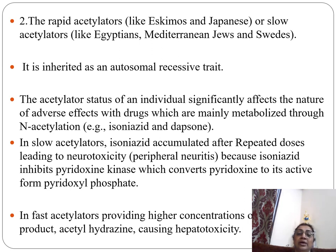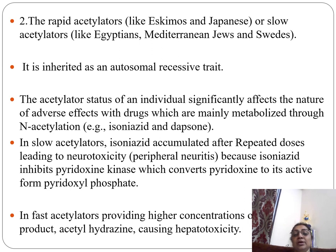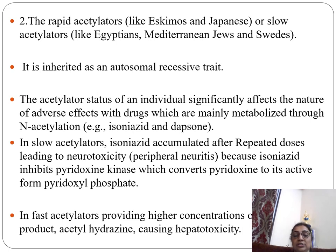The difference between rapid and slow acetylators is inherited as an autosomal recessive trait. Acetylator status significantly affects the nature of adverse effects for drugs mainly metabolized through acetylation, such as isoniazid and dapsone. In slow acetylators, isoniazid accumulates after repeated doses, leading to neurotoxicity because isoniazid inhibits pyridoxine kinase, which converts pyridoxine to its active form pyridoxal phosphate — causing peripheral neuropathy. In fast acetylators, increased metabolism of isoniazid decreases its efficacy.